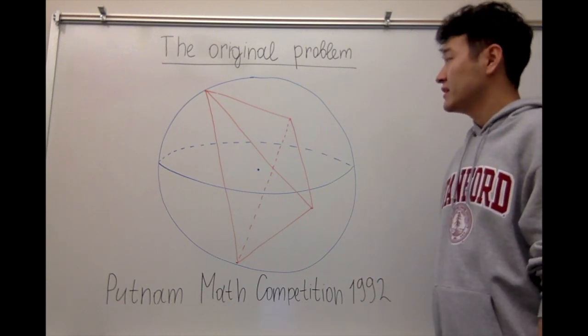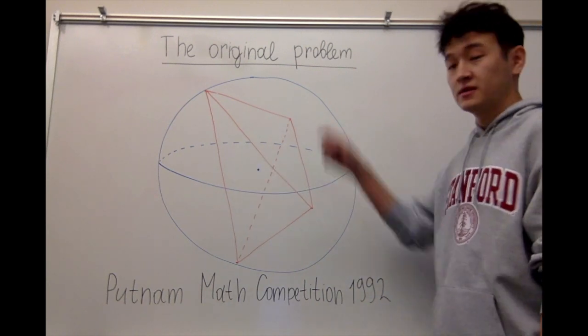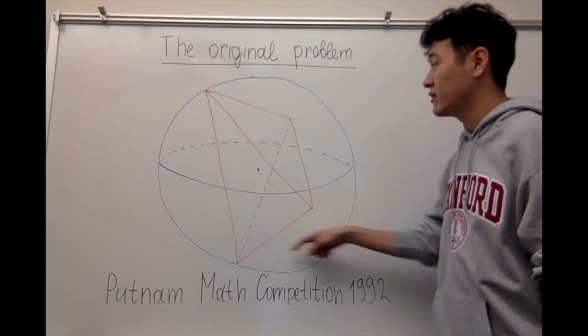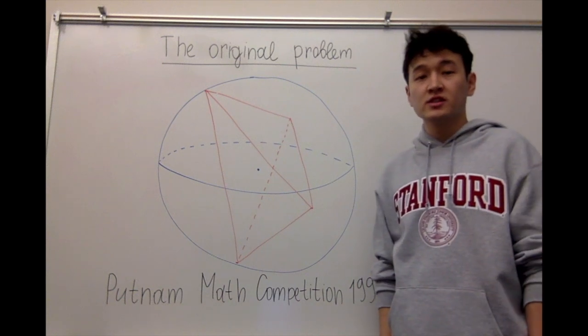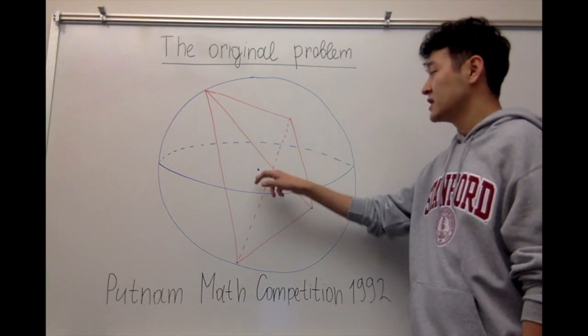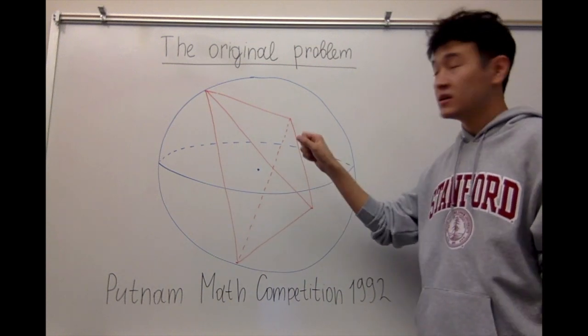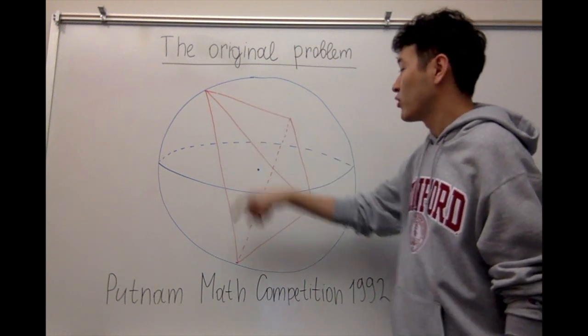The problem: given a three-dimensional sphere and four points chosen uniformly at random on the surface of the sphere, what is the probability that the center of the sphere lies inside a tetrahedron with vertices at those four points?